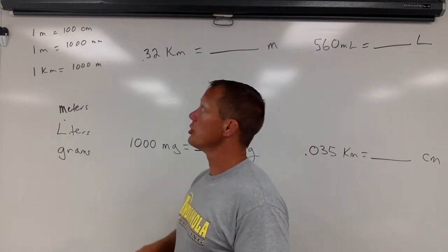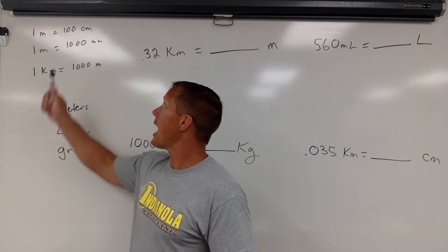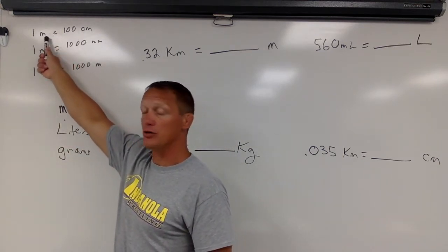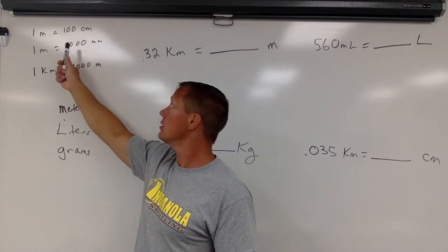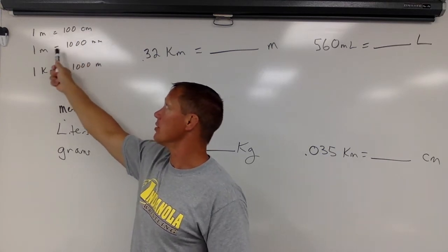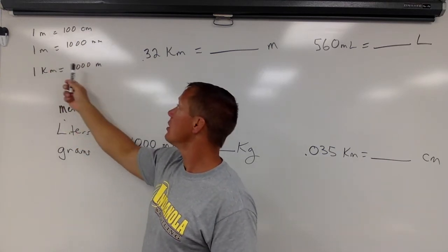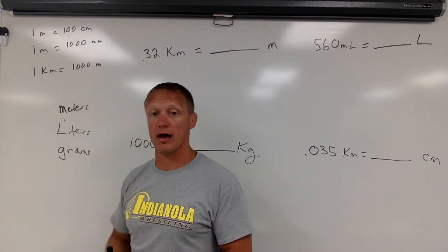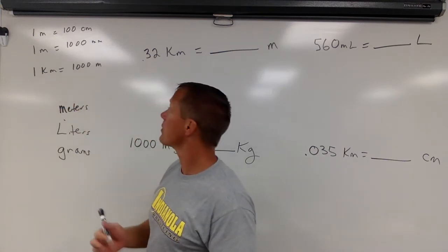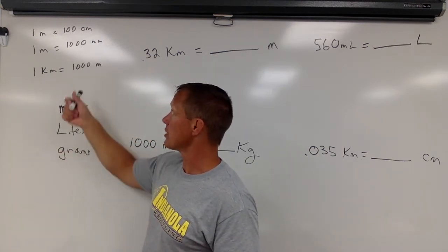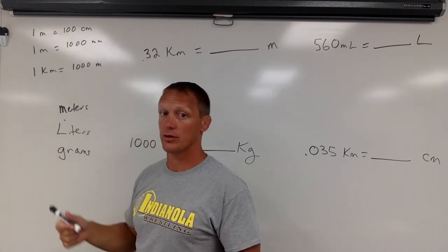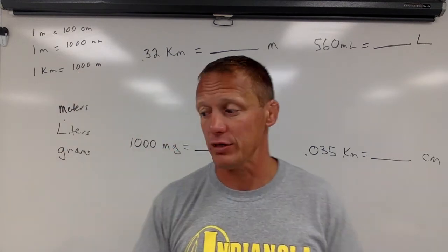So the conversions you should know: how many centimeters are in the base units - centi means 100. How many millimeters are in the base units? There's 1,000 millimeters in a meter. How many base units are in the kilometers? There's 1,000 meters in a kilometer. Same thing with liters - there's 1,000 liters in a kiloliter. Those conversions you need to just know.